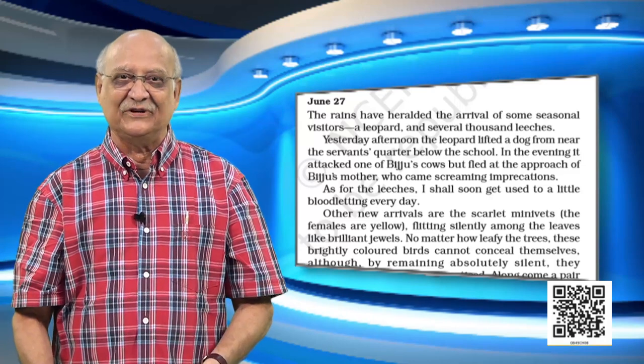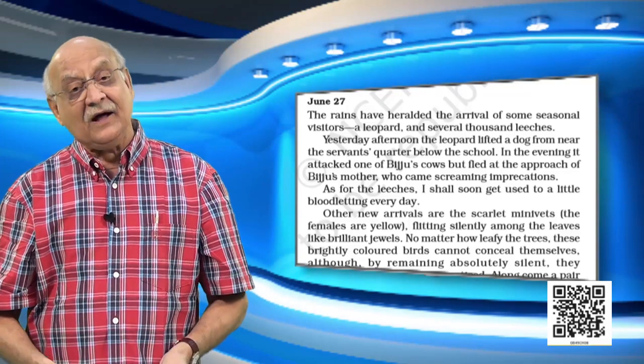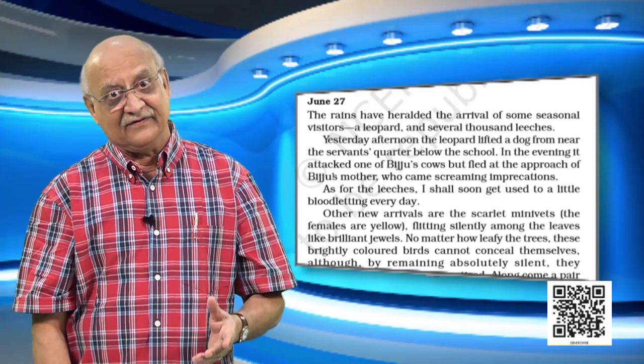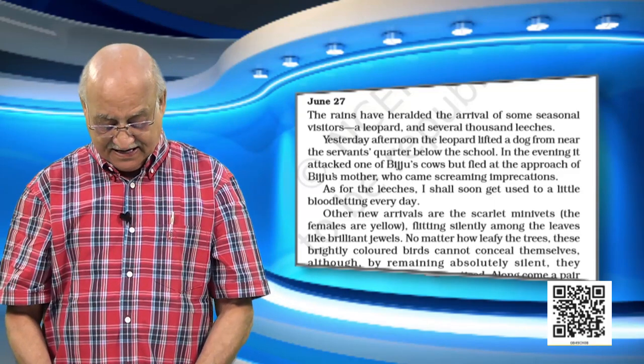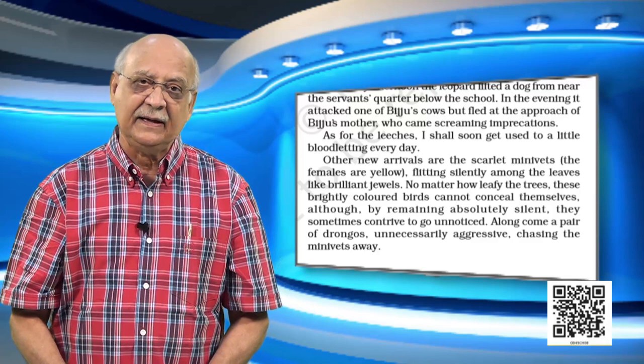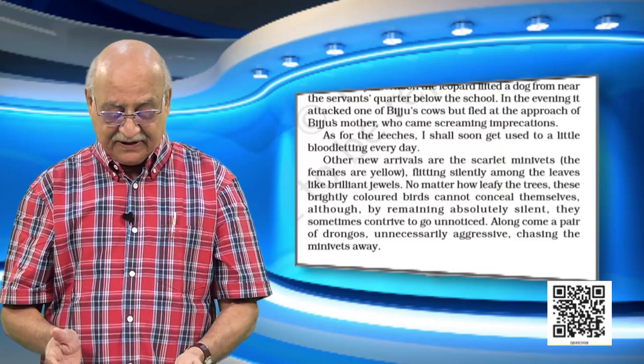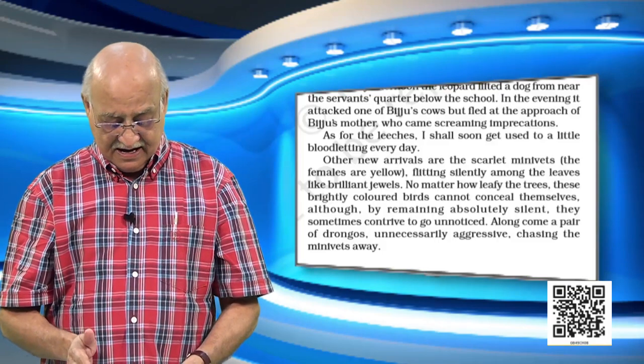So we saw the cobra lily in the first entry. Now we are seeing animals and little creatures. There are also some other new arrivals — look at the last paragraph. Birds. Scarlet minivets. You can see the meaning given there in the margin. And there are drongos, another type of bird. All these birds also arrive. So we saw the flower, we saw the animals, we saw the leeches, and now we see the birds.